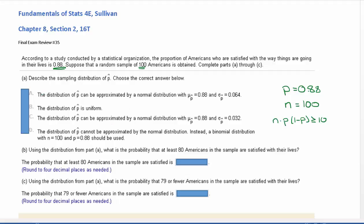That has us narrowing down our choices between A and C, because B is saying it's uniform and D is saying that it cannot be approximated by the normal distribution. So we know for sure that it's either going to be A or C. Now we have to figure out the mu sub p-hat as well as the standard error or the standard deviation, sigma sub p-hat.